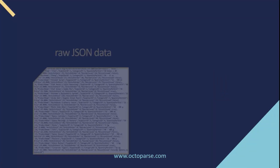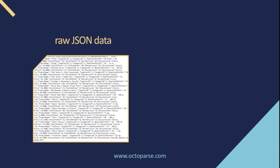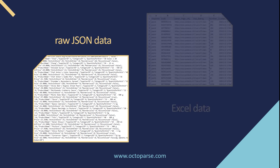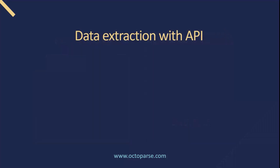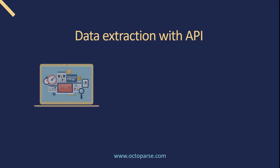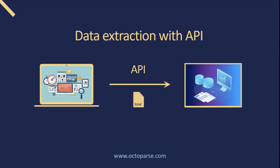Raw format data doesn't necessarily look user-friendly like spreadsheet rows and columns. As such, in order to consume the data from a product page, we need to go through a few steps for an intact process of extraction, transformation, and storage.